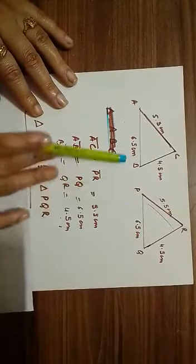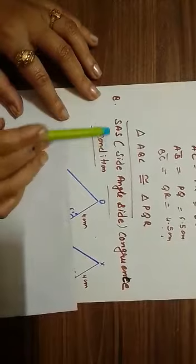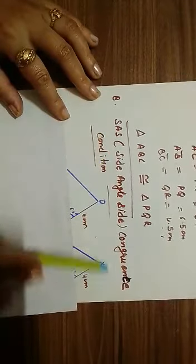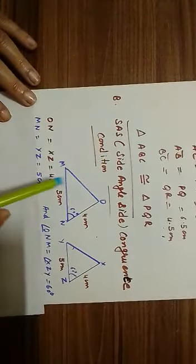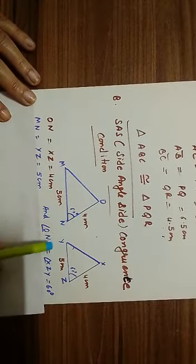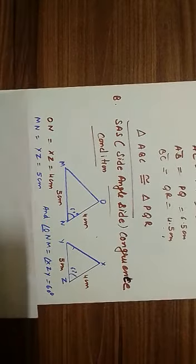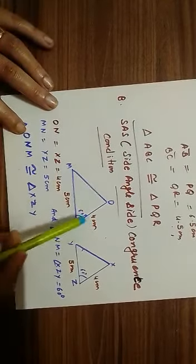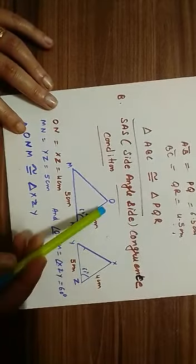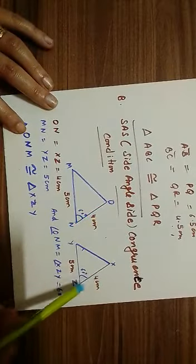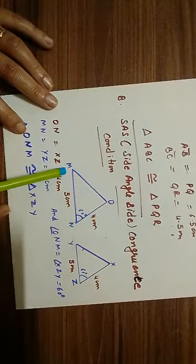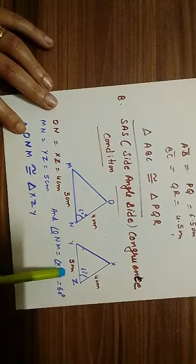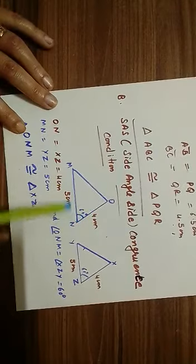Next is side-angle-side congruence condition. We have two triangles OMN and XYZ. Here, two sides and one angle are equal. ON equals XZ, that is 4 centimeters, and MN equals YZ, that is 5 centimeters.